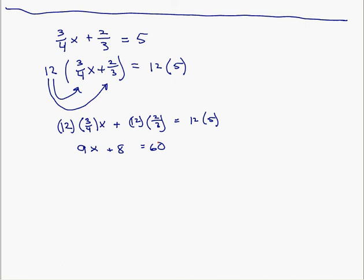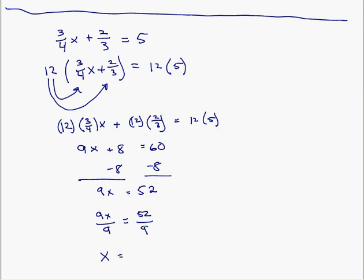I'm going to subtract eight from both sides of the equation, leaving nine x equals fifty-two. Then I divide both sides by nine, giving x equals fifty-two ninths. If we want to make that a mixed number: five times nine is forty-five, and forty-five plus seven equals fifty-two, so this becomes five and seven-ninths. Either answer works — fifty-two ninths as an improper fraction or five and seven-ninths as a mixed number.